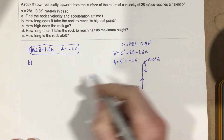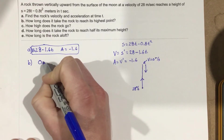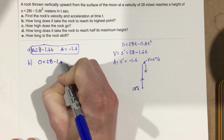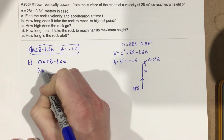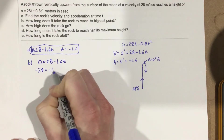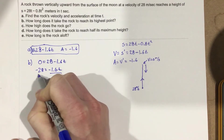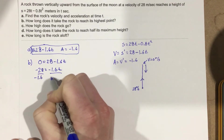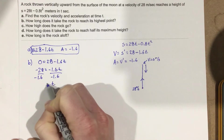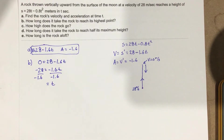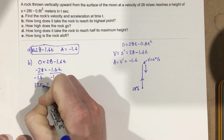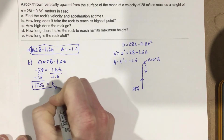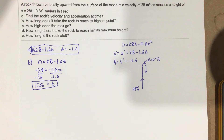Let's take the velocity equation and set it equal to zero. So 0 equals 28 minus 1.6t. Subtract 28 over: negative 28 equals negative 1.6t. Divide by negative 1.6, and we get t equals 28 divided by 1.6, which is 17.5 seconds. So at 17.5 seconds, the rock reaches its highest point.